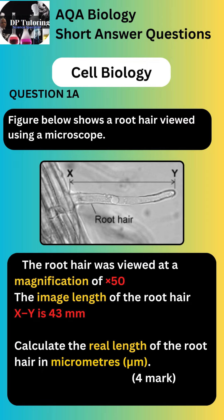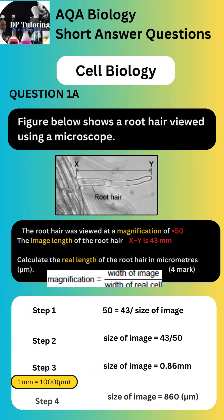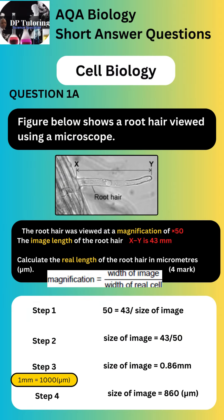One key point is that you need to provide your final answer in micrometers. The answer for part A is on the screen. However, so that you understand, there are four marks available, so the correct working out is important. Note that 1mm is equal to 1000 micrometers, so you will need to convert millimeters to micrometers. The final answer is 860 micrometers.